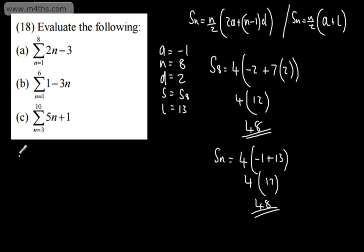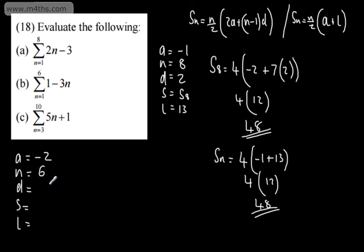For the next one, collecting the information — A, N, D, S, and L. We're looking at the sum from n equals 1 to n equals 6 of (1 minus 3n). Substituting n equals 1: 1 minus 3 gives a first term of negative 2. The number of terms from 1 to 6 is 6. The common difference is negative 3, since the expression decreases by 3 each time. The last term when n equals 6 is 1 minus 18, which is negative 17.